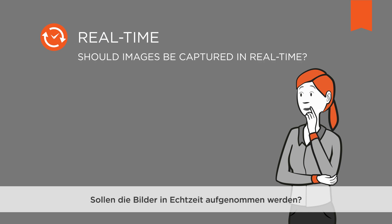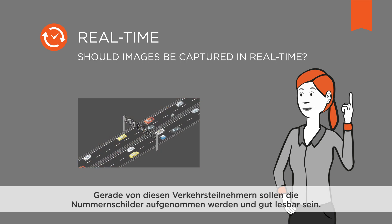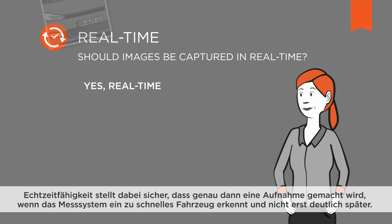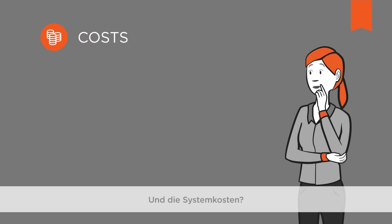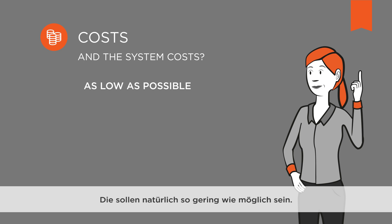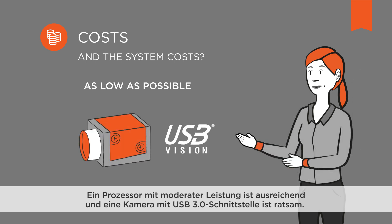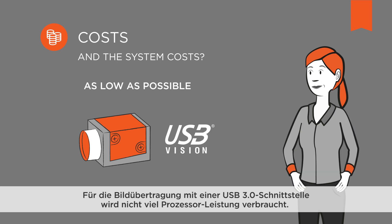Should images be captured in real-time? Cars are driving much too fast on the roads — these are the vehicles whose license plates should be captured in a highly legible way. Real-time compatibility ensures that the images are acquired if, and only if, the measurement system detects a vehicle driving too quickly, but then without delay. Otherwise, the image could be of the wrong vehicle. System costs should of course be as low as possible. A moderately powered processor is enough, and a camera with a USB 3 interface is recommended. That interface involves a very low processor load, meaning the processor can concentrate its entire performance on the application itself. Very little processor performance is required for image transmission via USB 3.